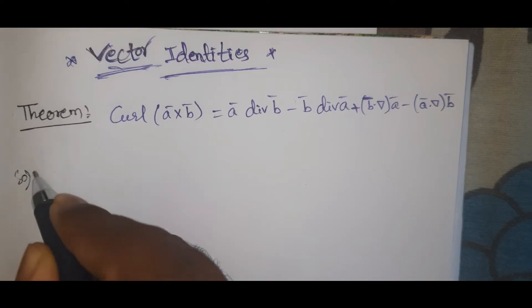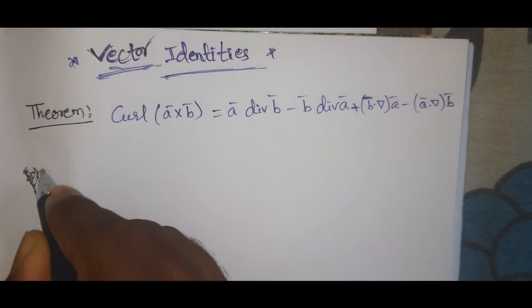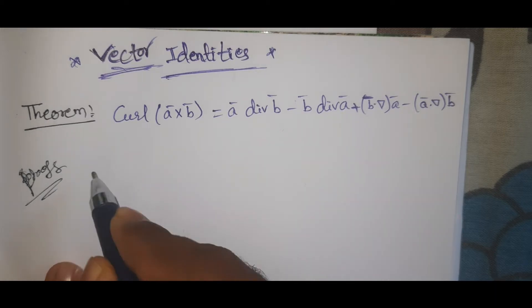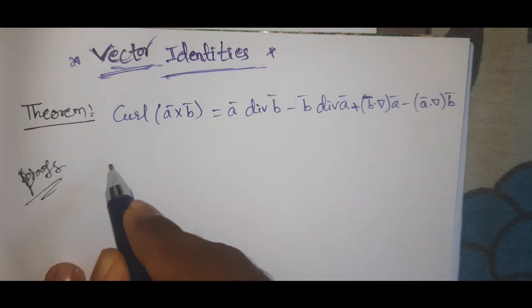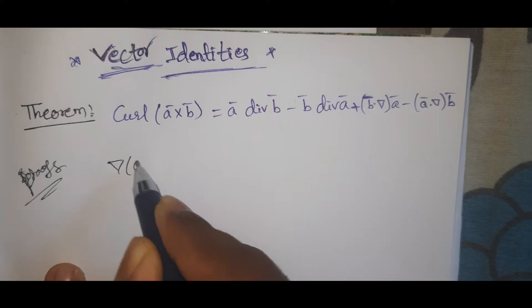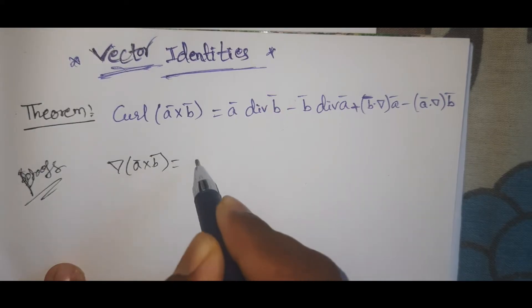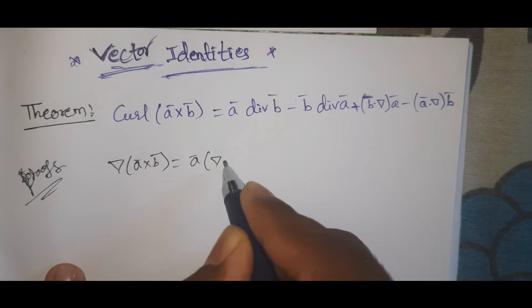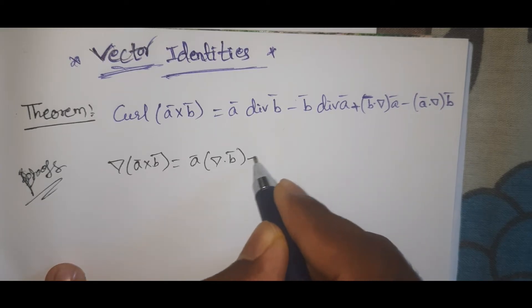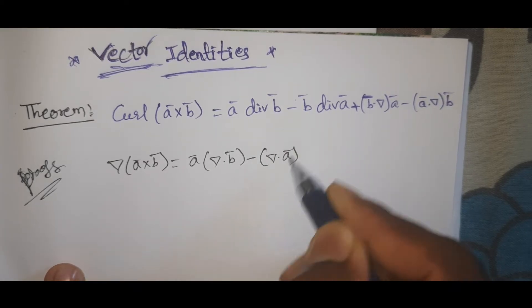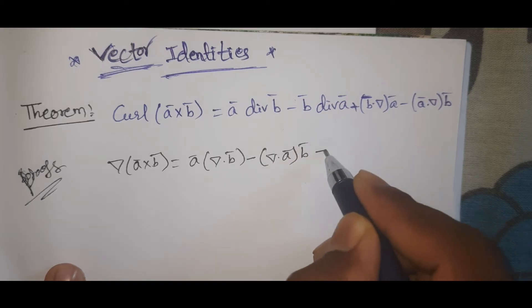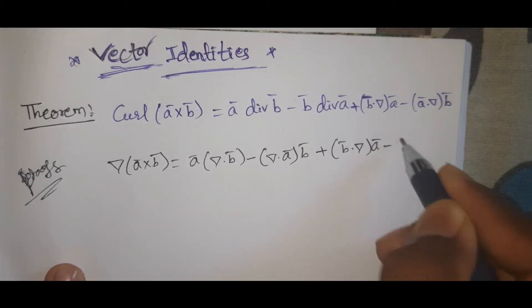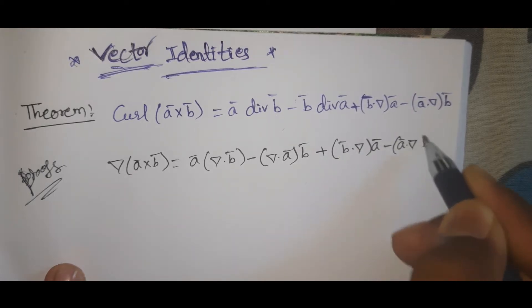This is the proof of this. We write: ∇(ā × b̄) equals ā(∇·b̄) minus (∇·ā)b̄ plus (b̄·∇)ā minus (ā·∇)b̄.